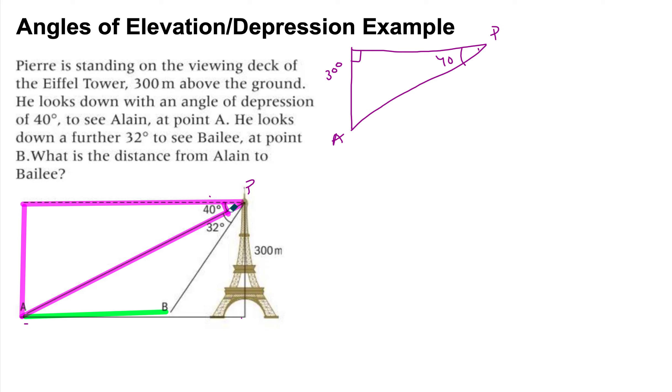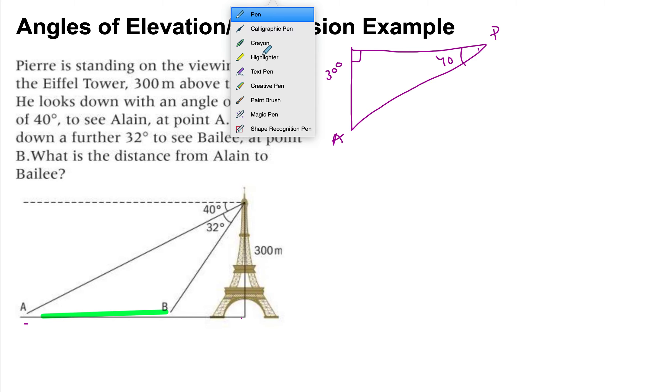So this is our first triangle. We can also look at the other triangle that's formed by the other angle of depression. So if you notice that Pierre has to look down a further 32 degrees to see Bailey. So a further 32 degrees means this will give us a total of 72 degrees. So don't be tricked by just the 32,